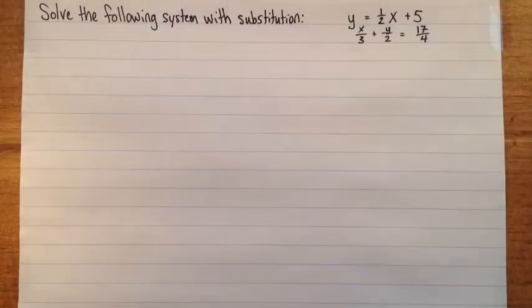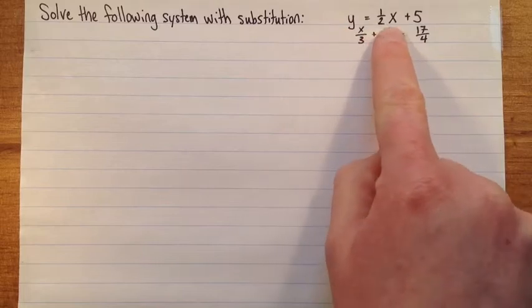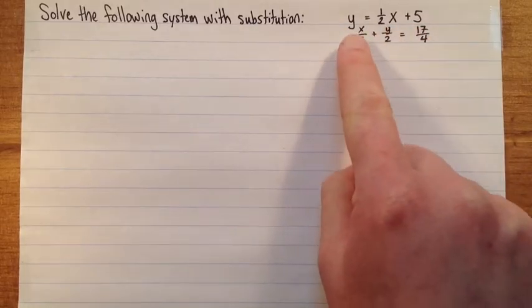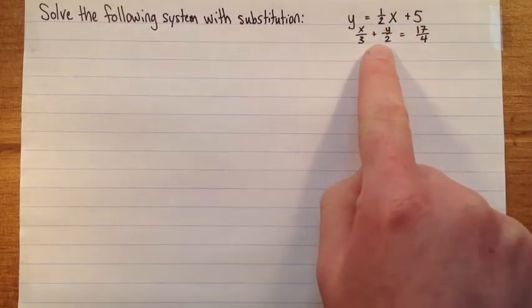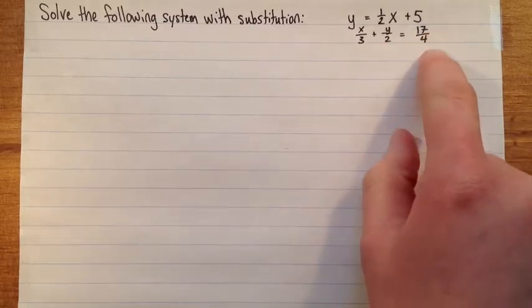Hi. In this video, I'm going to show you how to solve a linear system with substitution, and I'll do an example where the coefficients on the equations have tons of fractions in them, so I'll show you how to deal with that. This question is asking us to solve the following system. The first equation is y equals one half x plus five, and the second equation is x divided by three plus y divided by two equals seven over four.